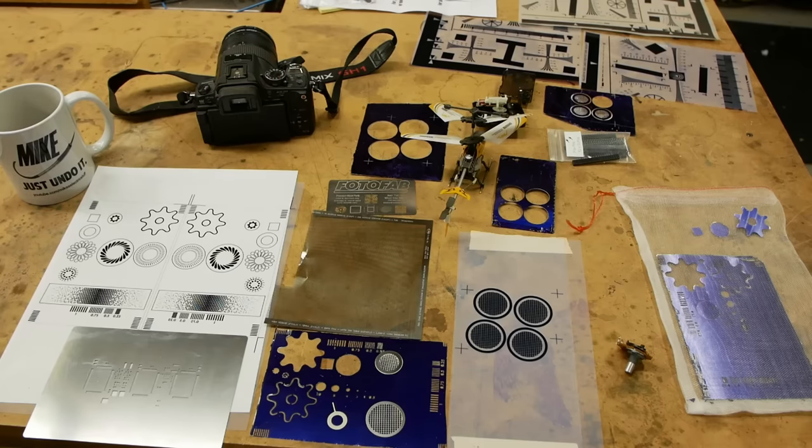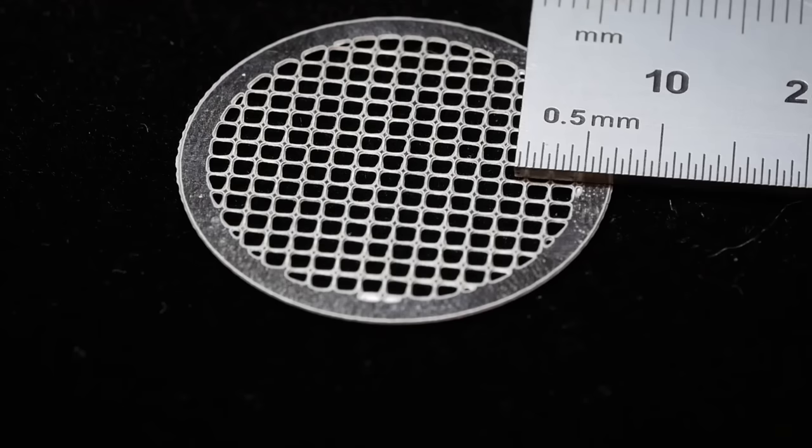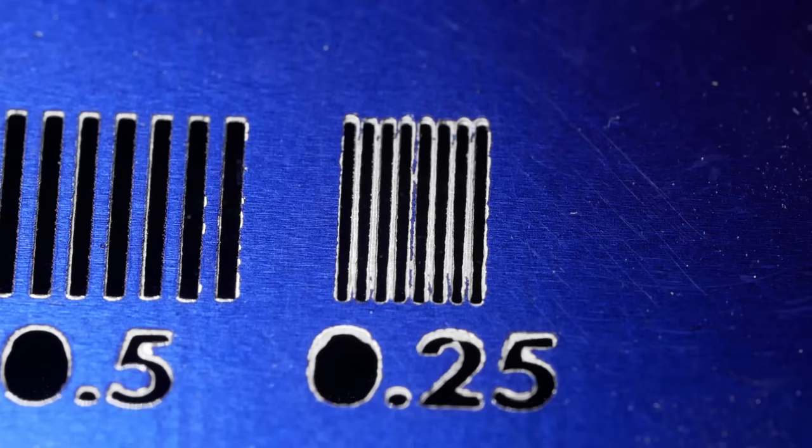Today on Applied Science, I'd like to show you how to make these etched metal parts. Sometimes you need a piece of sheet metal that has a feature cut into it that is too fine for a water jet or a laser cutter because it would distort the part.